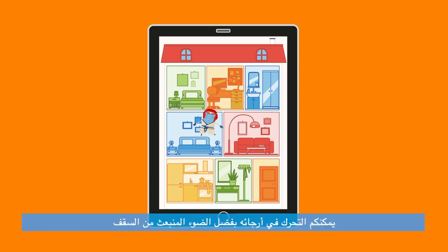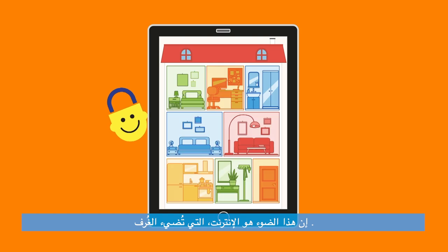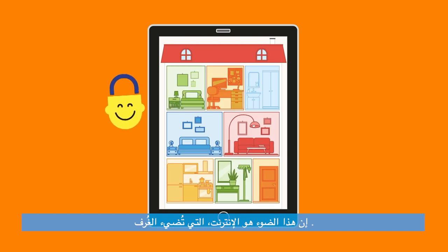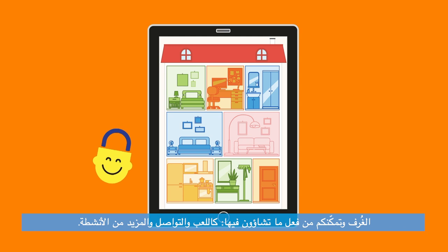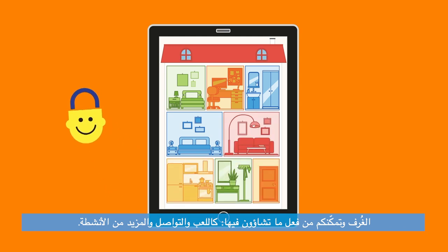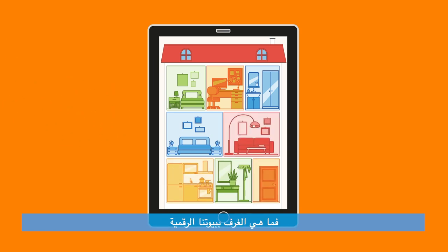Inside your house, you can move around thanks to light that comes in from the roof and the windows or from artificial light. This light is the internet that illuminates the rooms and allows you to do what you want inside them — like play, communicate and more. Without any light, you wouldn't be able to know what you are doing.